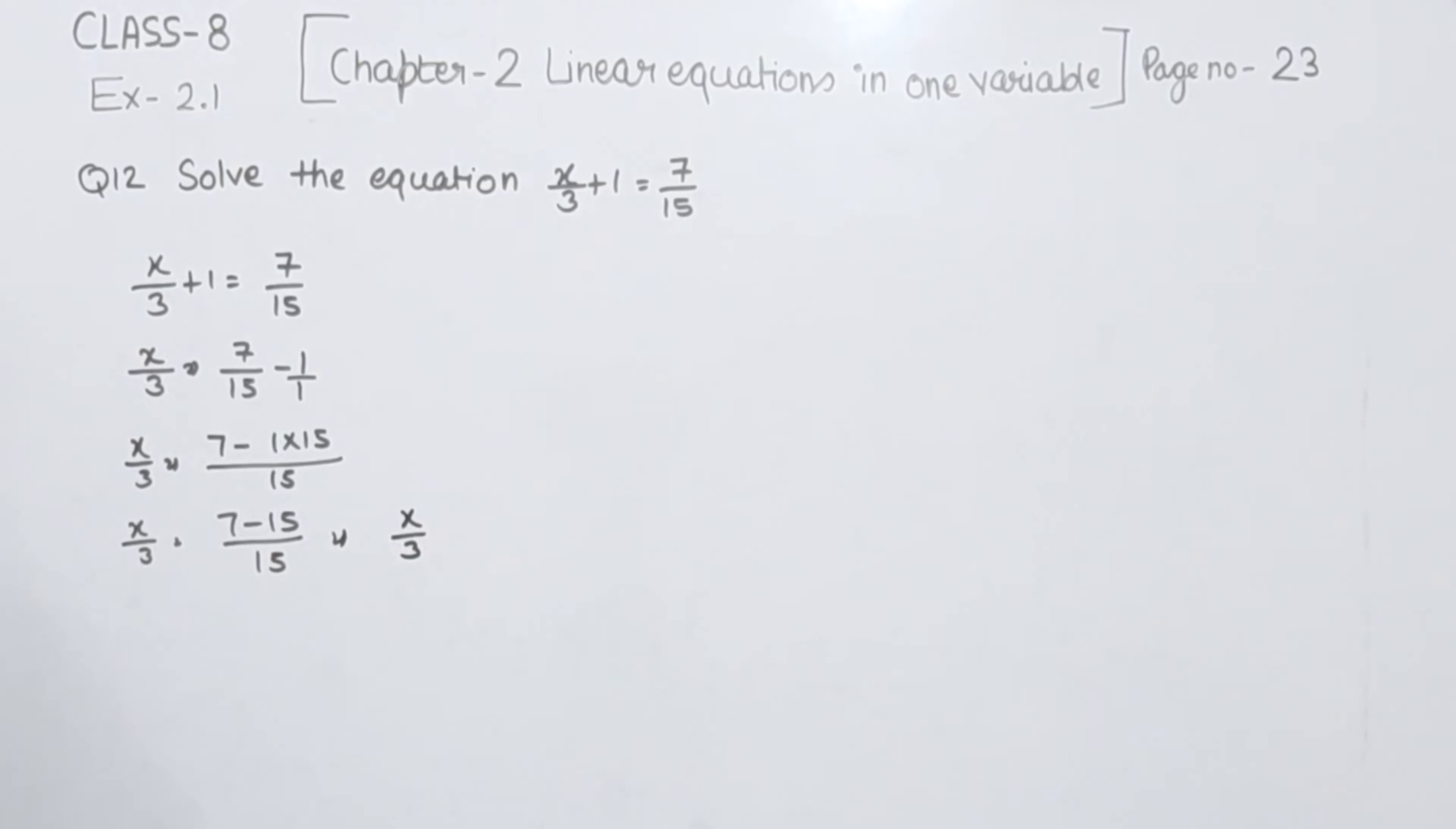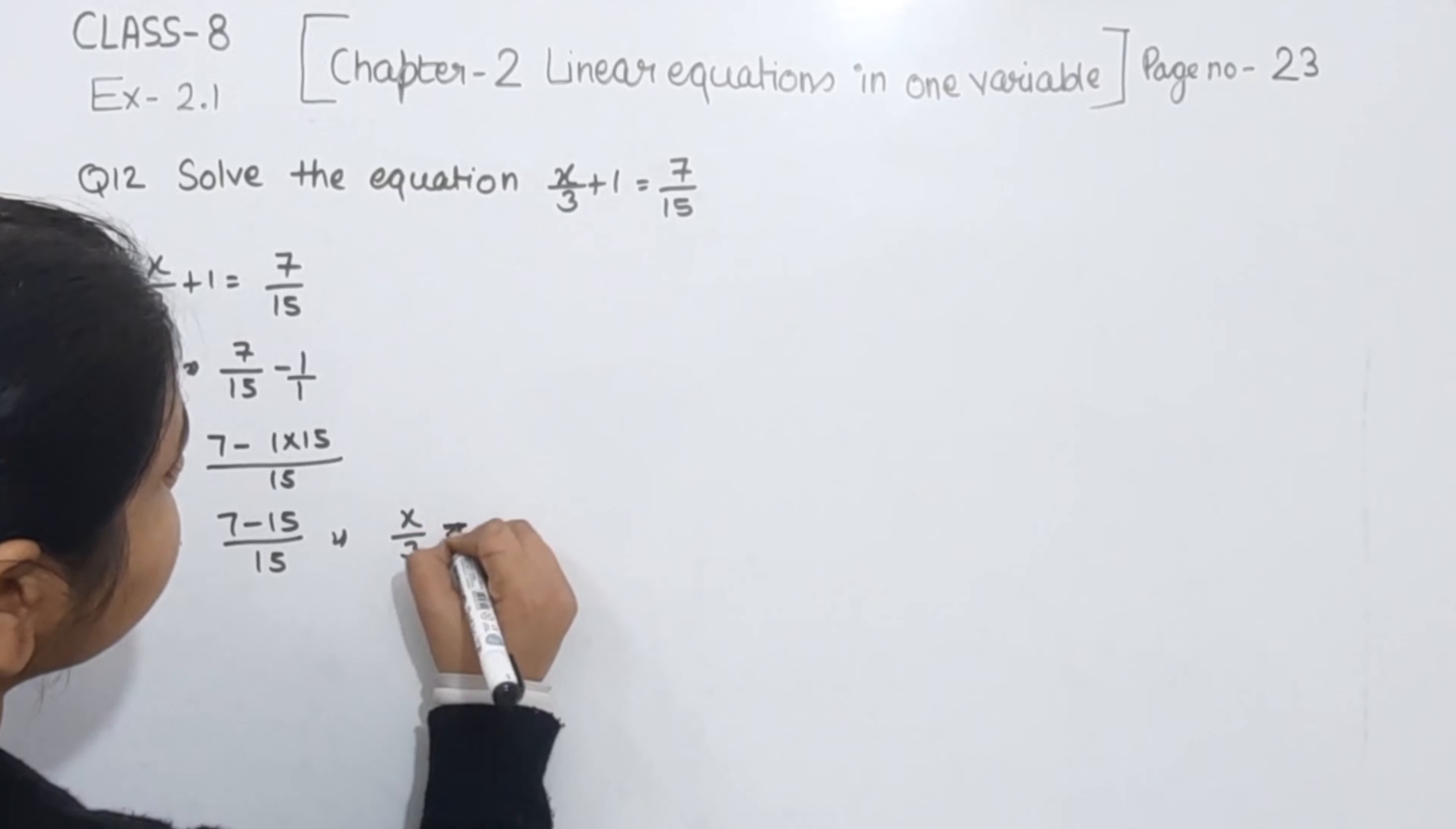Now x/3, 7 minus 15 we are going to write here as minus 8. So the value we are having is -8/15.